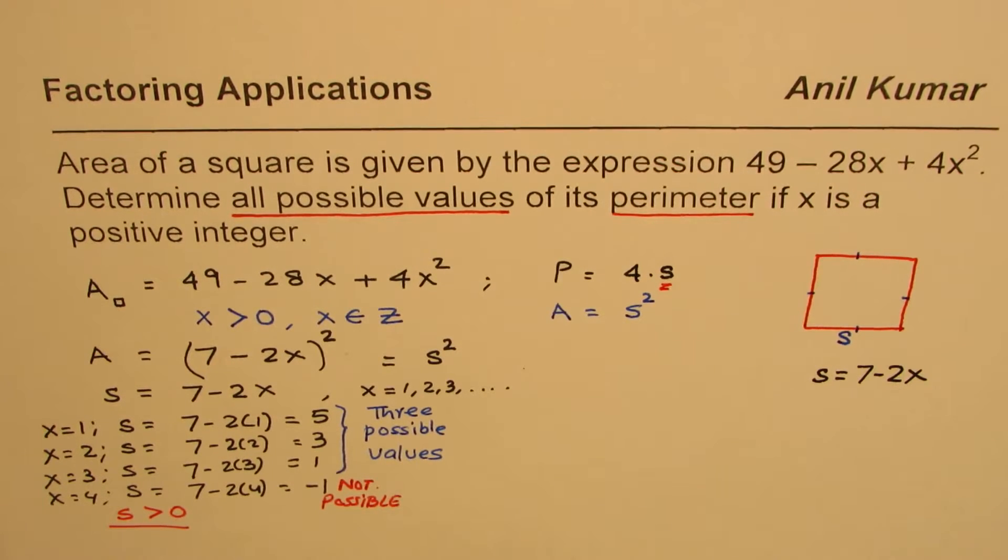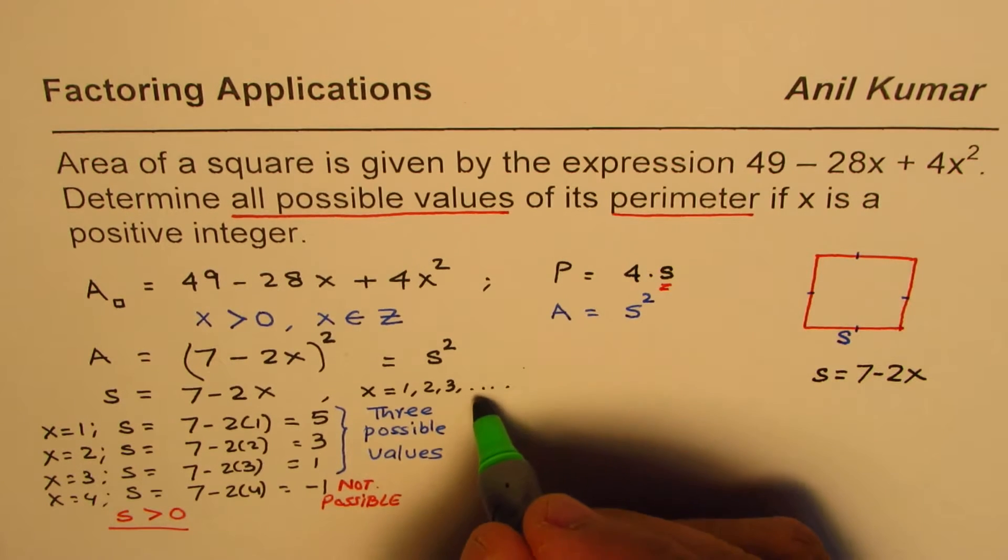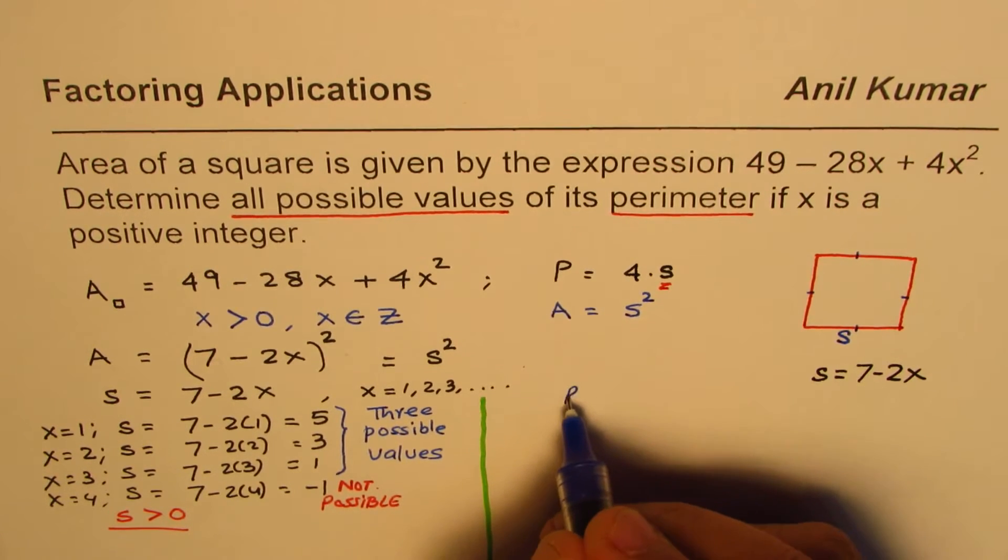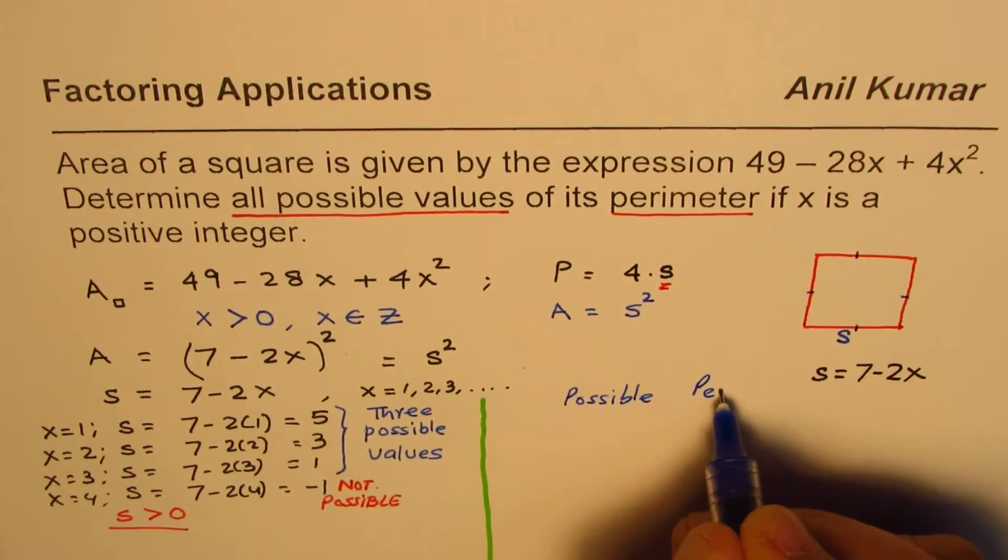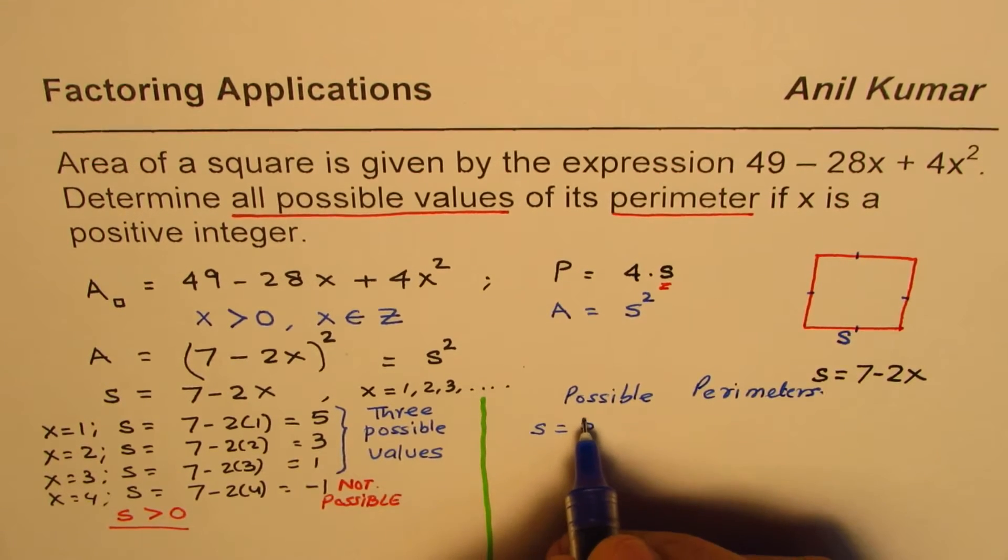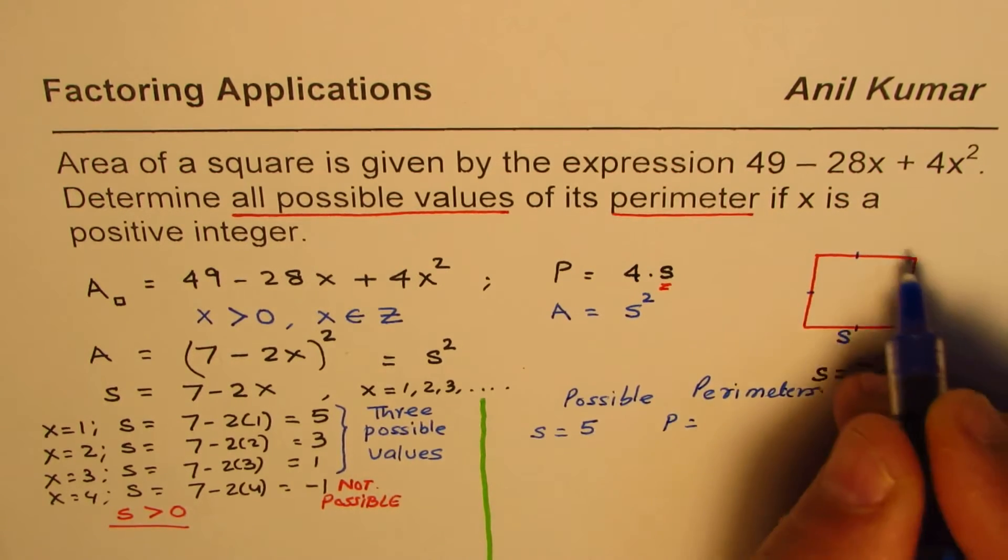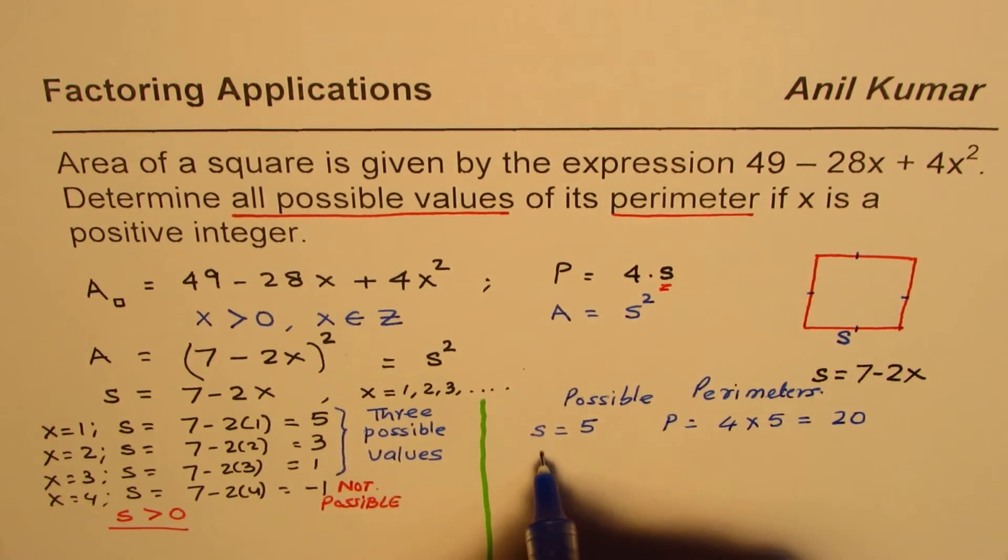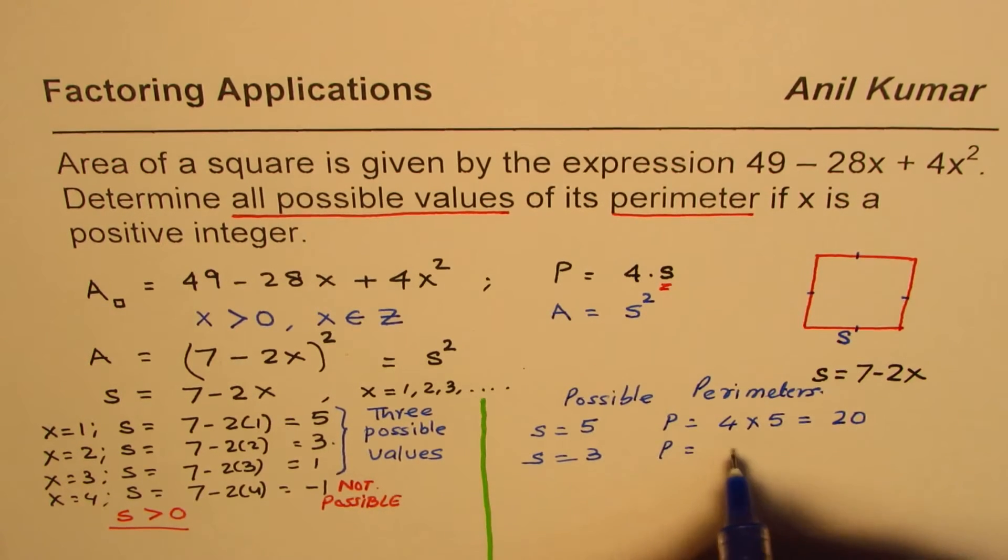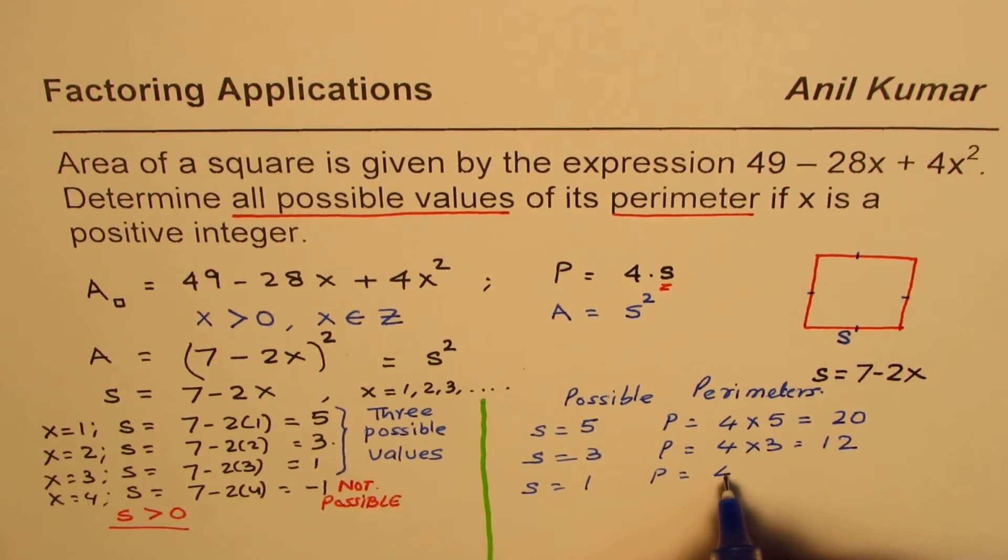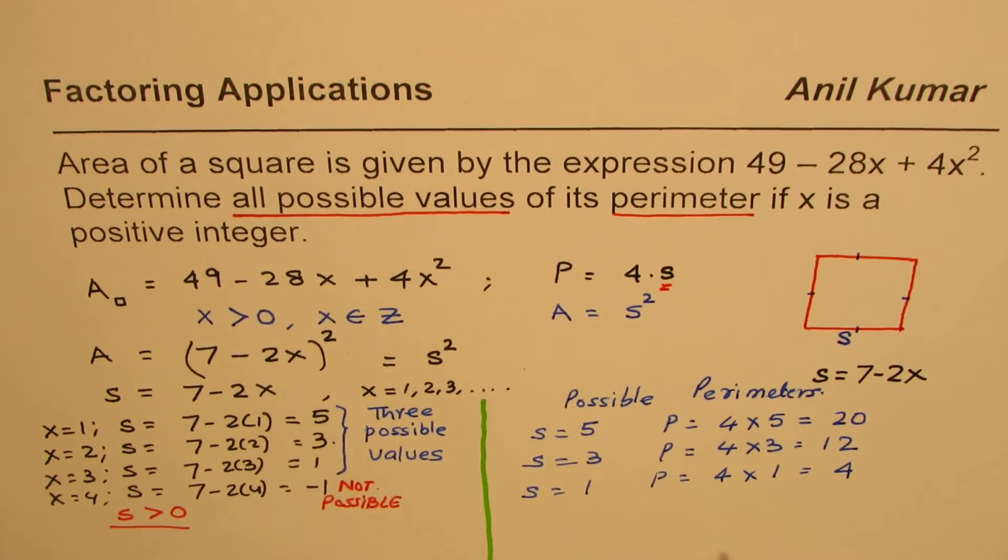Now, based on these three possible values, we can find three possible perimeters. If s equals 5, then perimeter equals 4 times 5, which equals 20. If s equals 3, perimeter is 4 times 3, which gives us 12. And if s equals 1, perimeter will be 4 times 1, and that is 4. So the perimeter will be 20, 12, or 4.